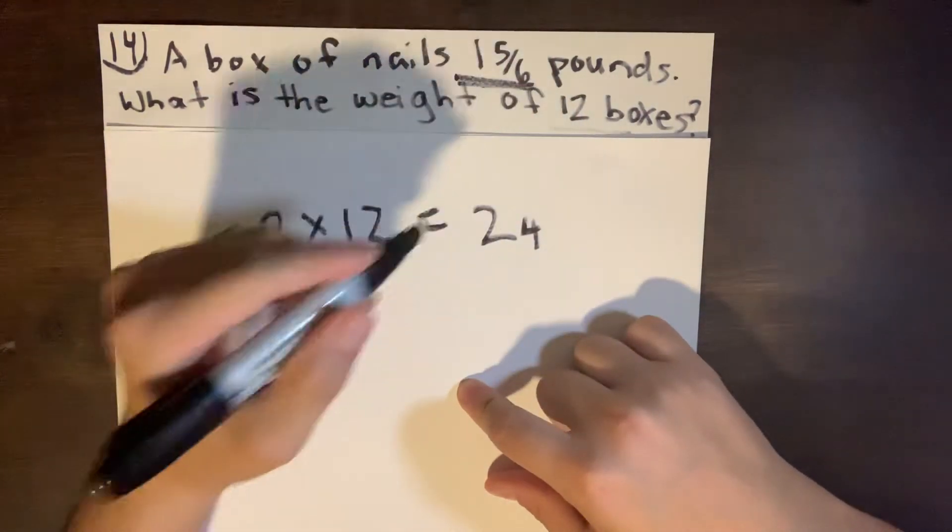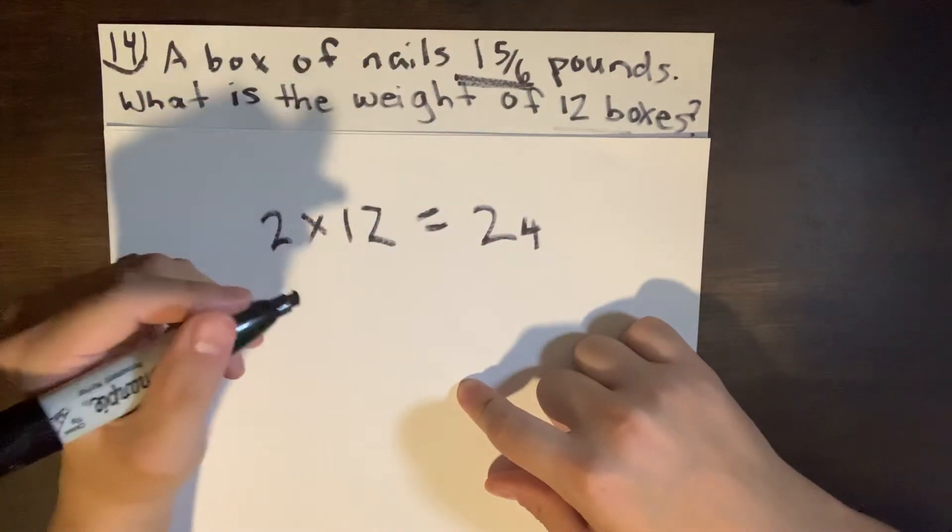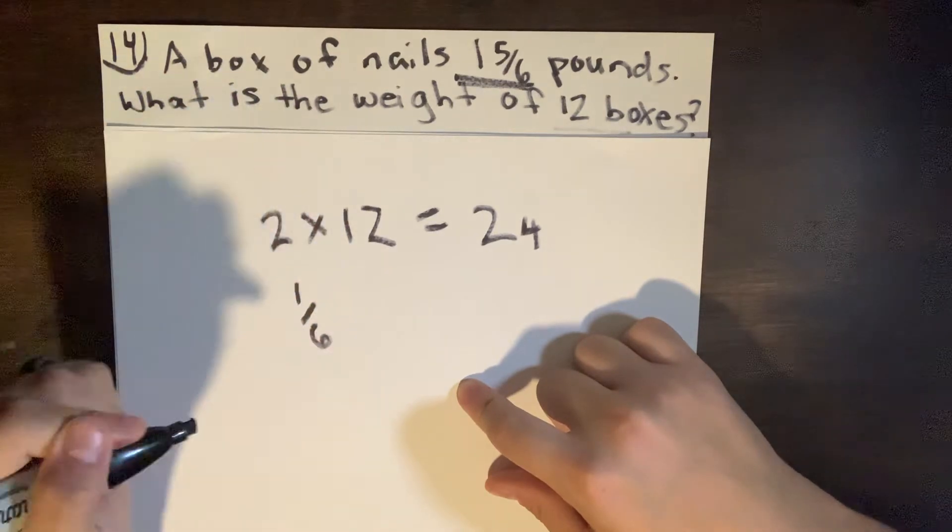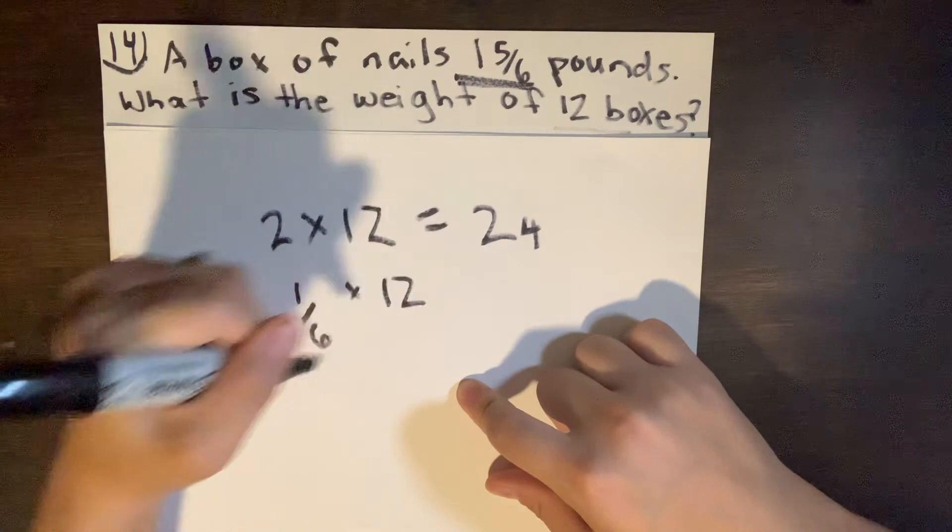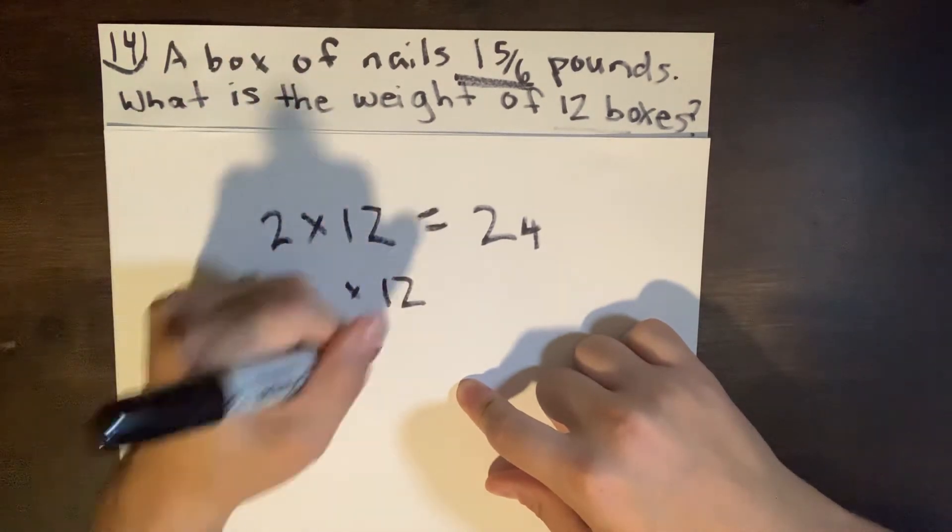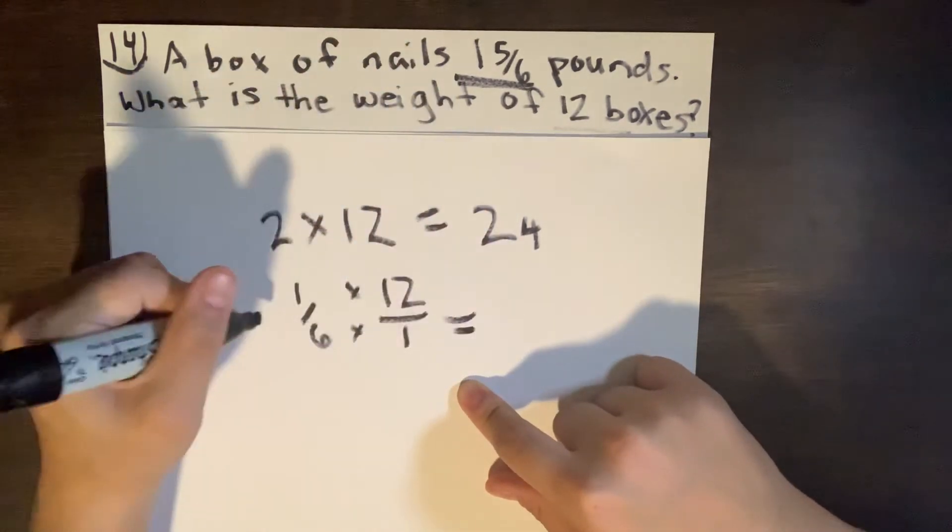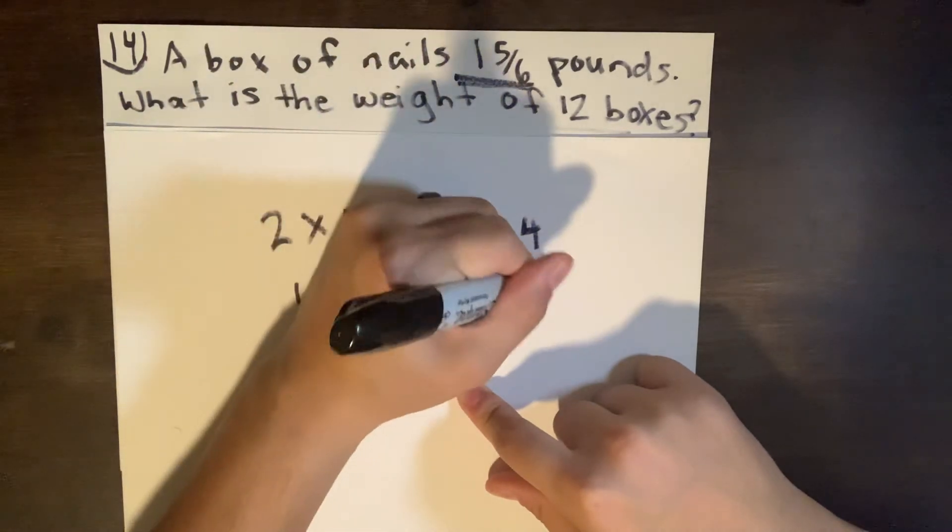Now one and five sixths, that's one sixth away, as I said. So we can just simply do this. One sixth, we're just going to take that times it by twelve times it by one, right? One times twelve equals twelve.